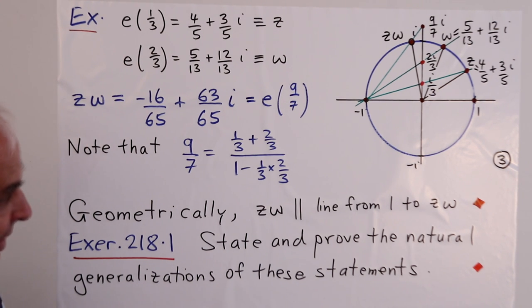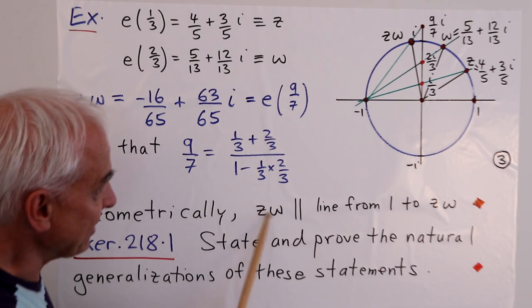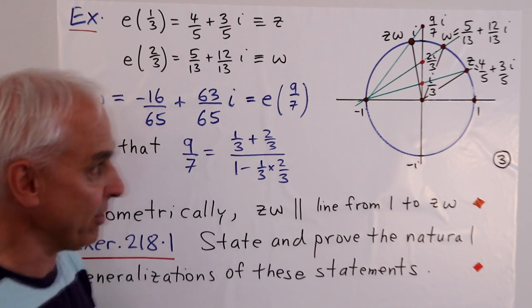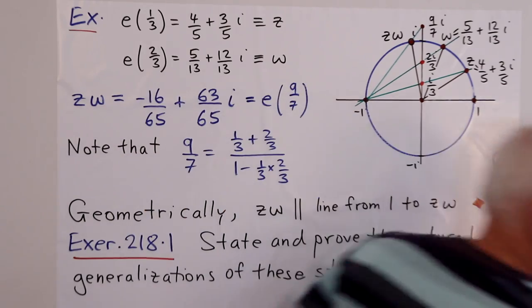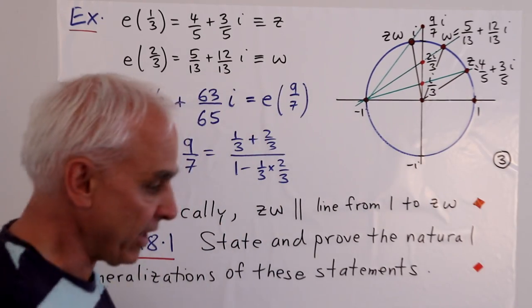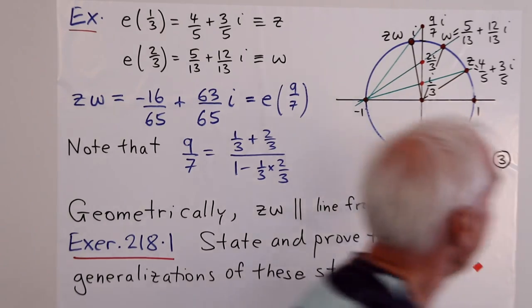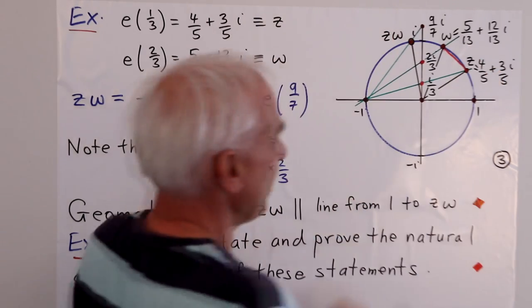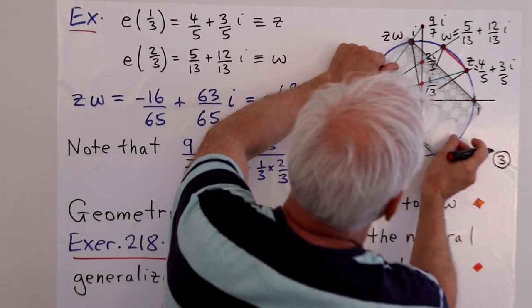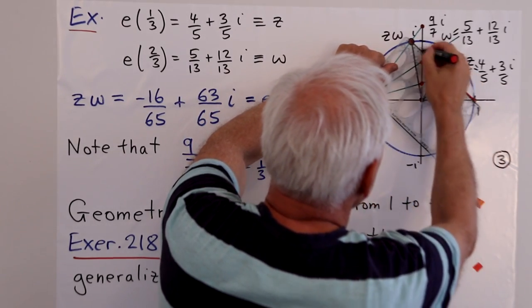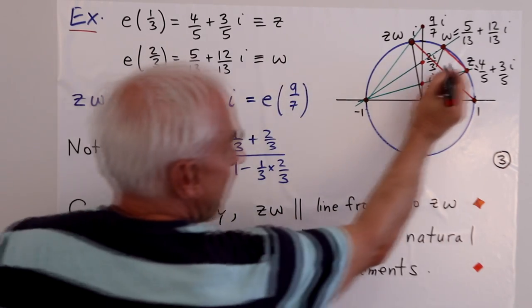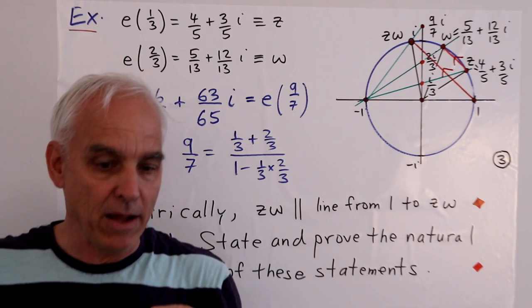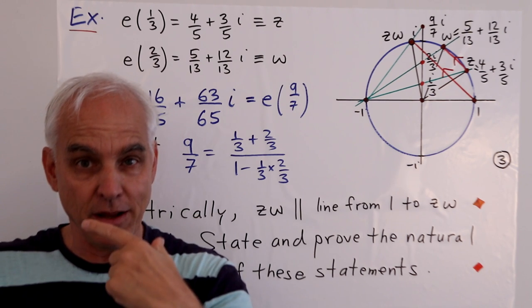Geometrically, it turns out that zw, the line joining z and w is parallel to the line from 1 to zw. This is a remarkable additional feature of this situation. If we took this line right here, that's the line joining z and w. And then we also took the line joining 1 and zw, those two lines are parallel.